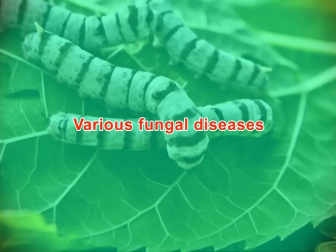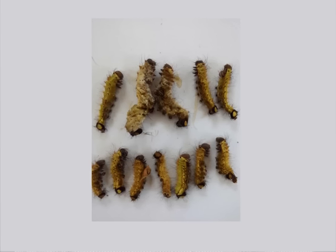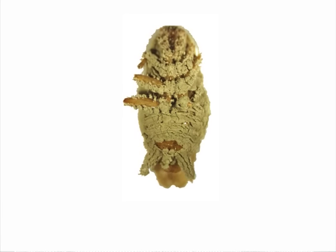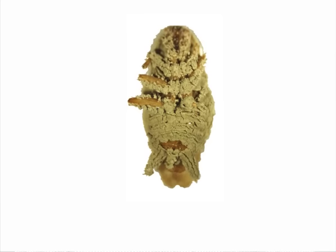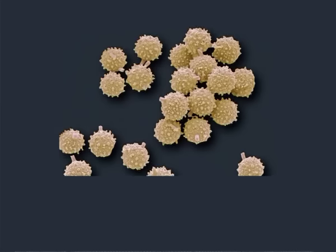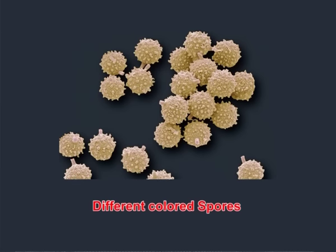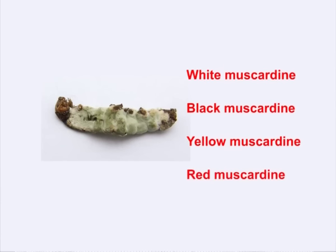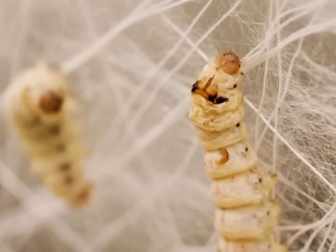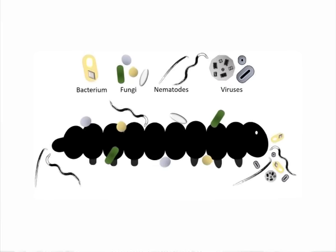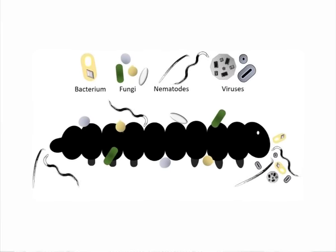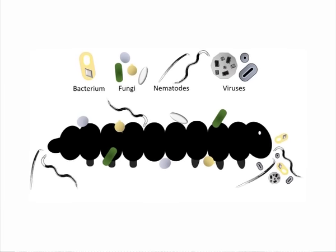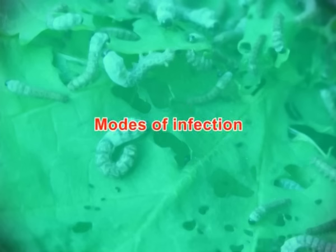Fungal diseases of silkworms are called muscadine. The characteristic feature of these diseases is the mummification of the infected larvae during and after death, and deposition of calcium oxalate salts. Hence this disease is also called calcino. Different infesting fungi produce different colored spores, giving rise to white muscadine, black muscadine, yellow muscadine, and red muscadine. These differ from each other in the tissues they infect, but the general modes of infection, symptoms, and control measures are the same for all muscadine infections.